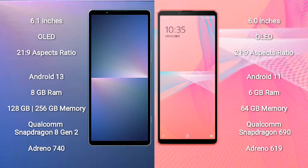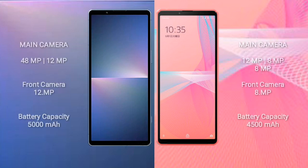The Sony Xperia 5 Mark 5 comes with 8GB RAM and 128GB or 256GB internal storage, with a Qualcomm Snapdragon 8 Gen 2 processor and Adreno 740 GPU. The Sony Xperia 10 Mark 3 Light comes with 6GB RAM and 64GB internal storage, with a Qualcomm Snapdragon 695 processor and Adreno 619 GPU.